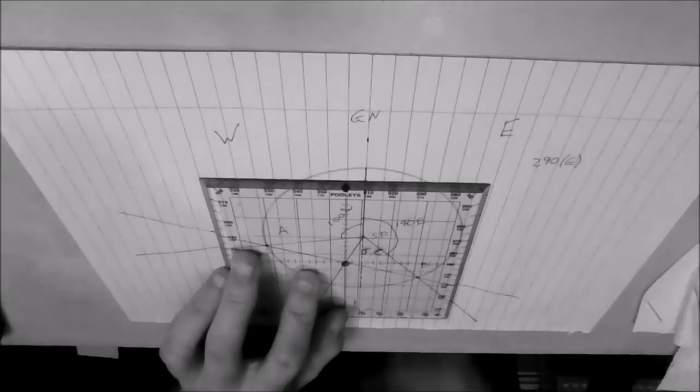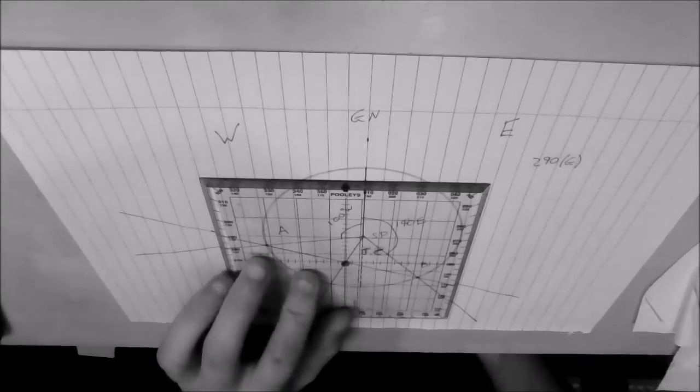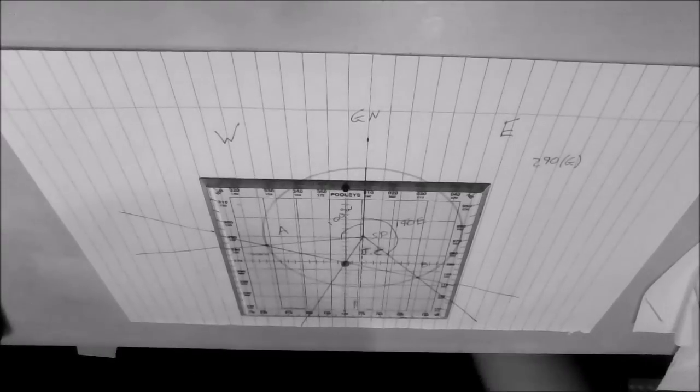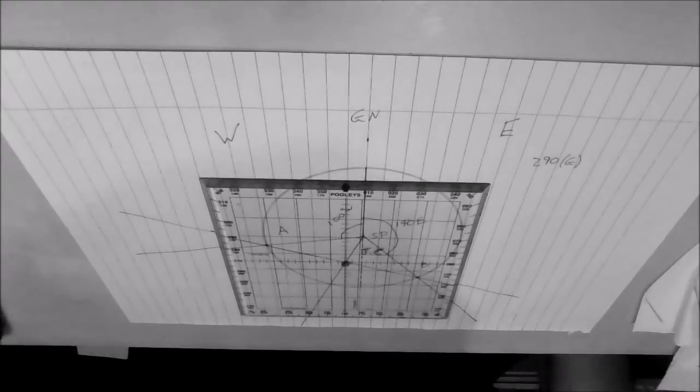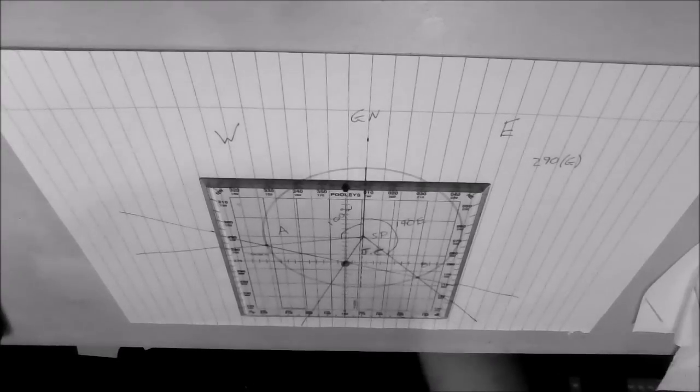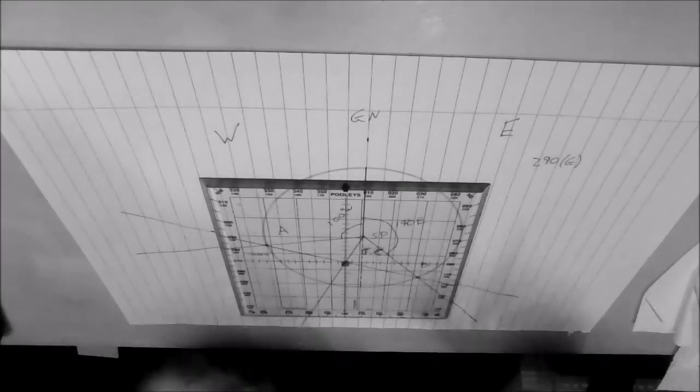And that is 290 degrees grid, because it is 290 degrees off our grid north, which is here. OK, so that is our grid track that answers the first part of the question. And as you'll see, actually, from the question, all the answers, there's only one answer that starts with 290 degrees grid.